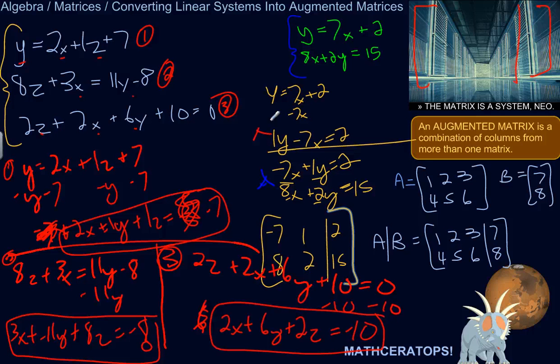Over on the right we'll do our constants: negative 7, negative 8, and negative 10, all negatives. Then let's do the coefficients. 2, negative 1, 1.